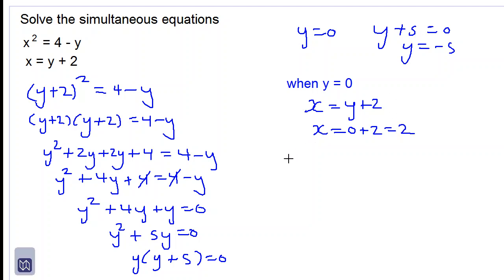And when y is equal to negative 5, we substitute for y here. So we have x would be equal to negative 5 plus 2. So x would be equal to negative 5 plus 2 is negative 3.